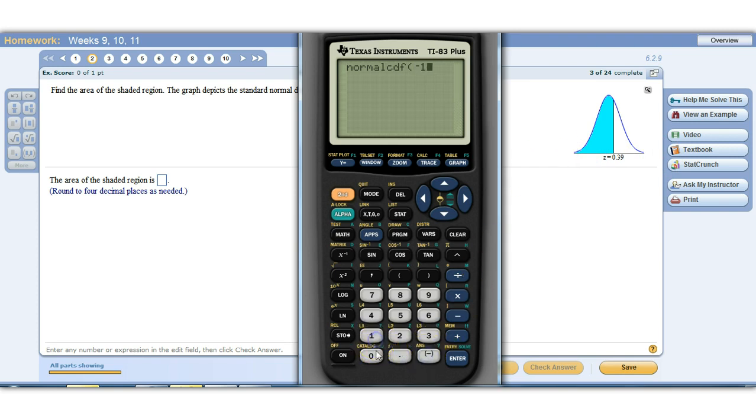So we can pick any number we want to, but negative 10 is plenty far enough away. Remember, 99.7% of the Z-scores, possible Z-values fall between negative 3 down here and positive 3. So negative 10 would be way over here. So that's plenty big or plenty small for the first number. And it's going to end at 0.39, so we're going to put in 0.39 and close it off, hit enter,